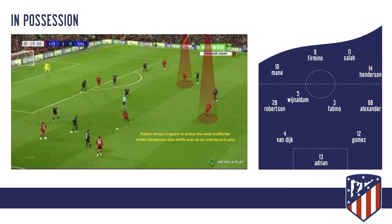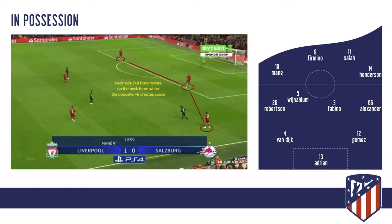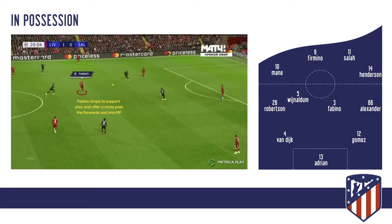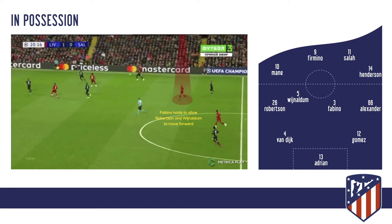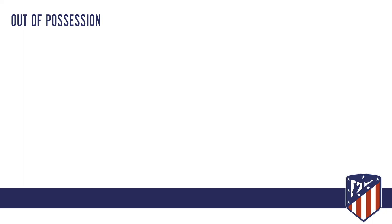In another possession clip, playing out from the back — back two, a supporting player dropping — the full-backs move forward into wide positions. They play out to Robertson, with the near-side full-back forming a back three, and the opposite full-back pushing on to create space. Fabinho drops to support the play and offer a route through midfield to the forwards. Robertson retains possession, and they quickly build out. Fabinho or Wijnaldum will hold while Robertson attacks. In the final third, quick one-two pass and move — very lethal. Wijnaldum and Robertson push to the edge of the box to support the play.